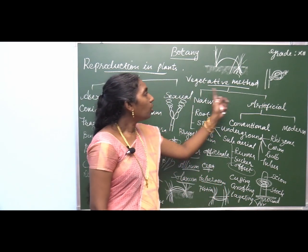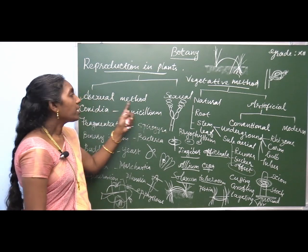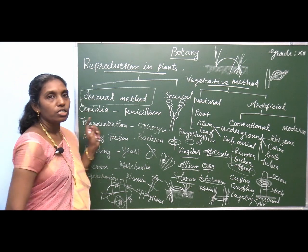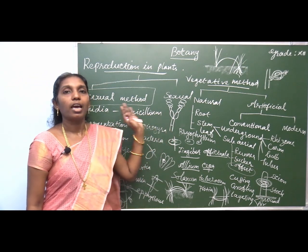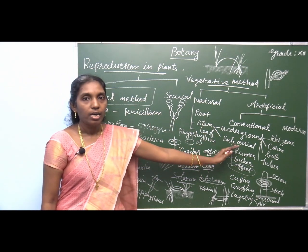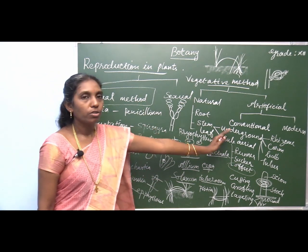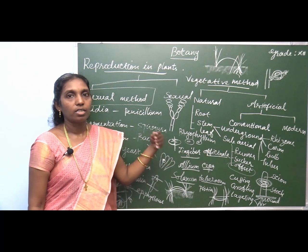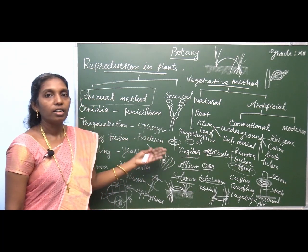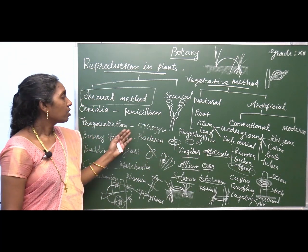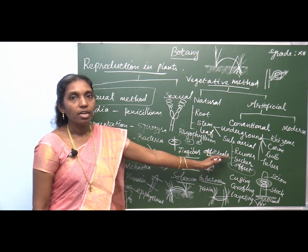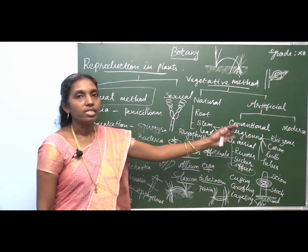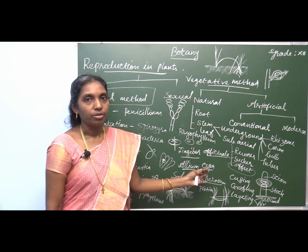All the methods learned today fall under the asexual method of reproduction. Today's topic is asexual method of reproduction — there are several types. This is not new to you; you already learned this clearly in 11th standard. Once again, recall what you learned today. Before the next class, try to learn all these terms. It is easy. Thank you.